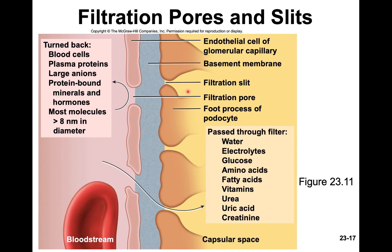The items that do get through include water, electrolytes (your salts), glucose — just small amounts — amino acids, fatty acids, and vitamins. Then there are three waste products, all of which contain nitrogen. You do not want to accumulate nitrogenous waste in your blood, so your kidneys excrete them through filtration.